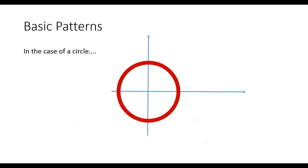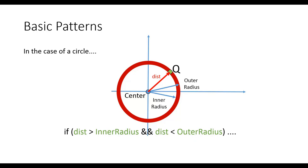In the particular case of a circle, you have a center point, an inner radius, and an outer radius. To check if a point is on the circle, we measure the distance from the center to the query point and check: is it greater than the inner radius and less than the outer radius? If true, we are on the circle.